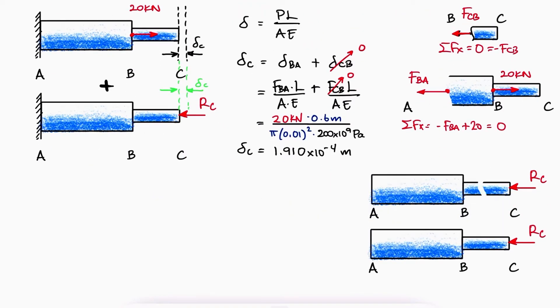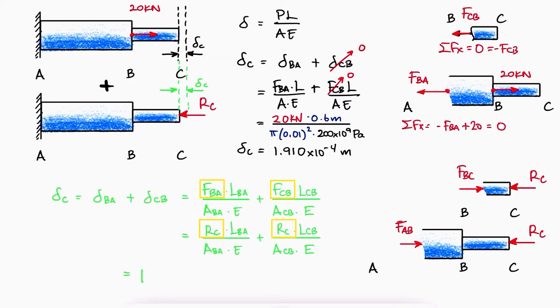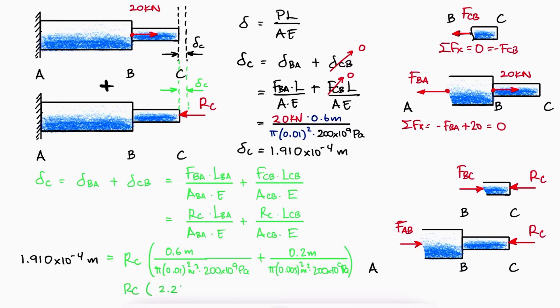Since the internal force in this second case is the reaction force at C, both sections are subjected to that force, which means we can write the two section deformation expressions with that being the internal load. By doing this, we can solve for it using the information deflection from the first case.